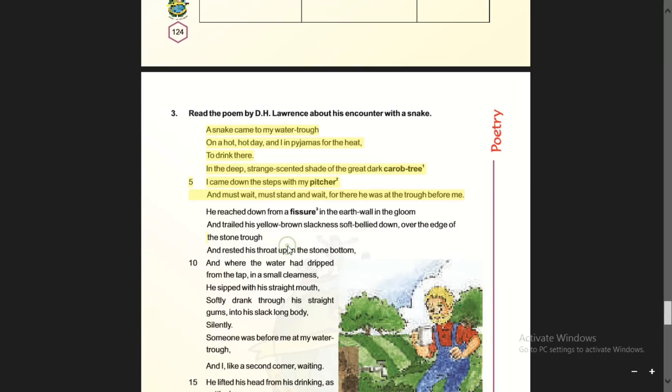Summer season is very warm, and at that time a snake comes to the poet's water trough. The water trough means a long narrow container where people get water. On a hot day, the poet was wearing pajamas because it was summer. The snake was thirsty, that's why he came there. In the deep strange scented shade of the great dark carob tree, near the water trough, it is very heavy and shady.